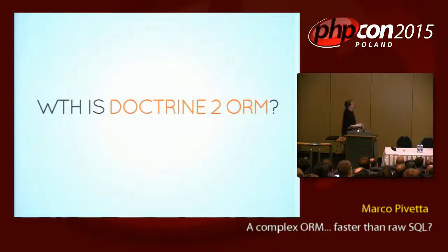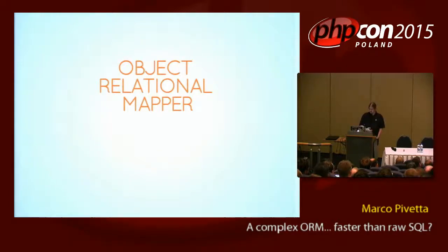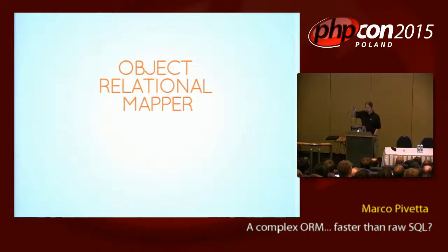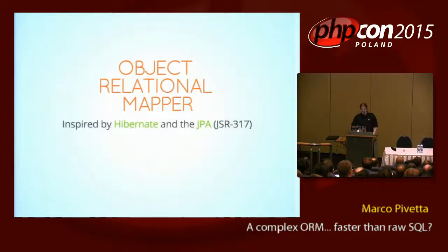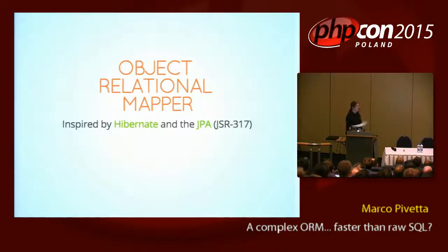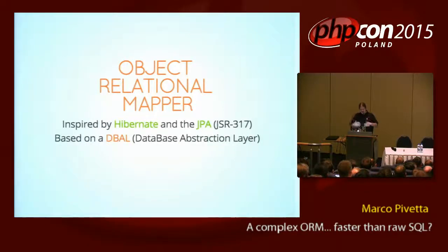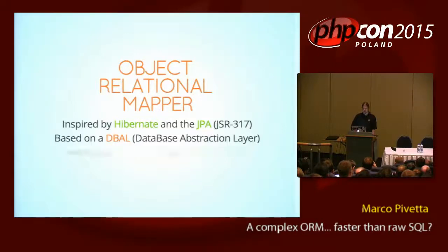So what the heck is Doctrine ORM? Doctrine 2 ORM? So an object relational mapper — this means that it takes your objects and your relational database and connects them together. It takes and persists everything based on pretty much the API of Hibernate. So we took the ideas of Hibernate and made them our own. It's nothing new. And it's based on a database abstraction layer, so you don't need to change everything in your application because you want to support different databases. It just works out of the box.